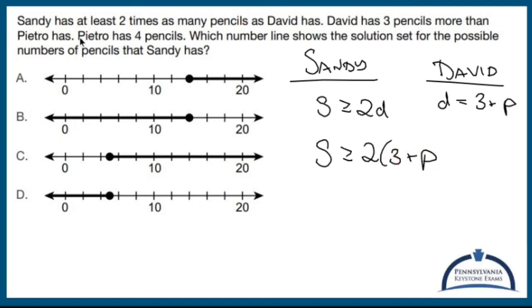Oh, and Pietro has four pencils. Oh, so let's turn that P into four. So three plus four. Oh, I didn't even notice that. There we go. That makes life a lot easier.